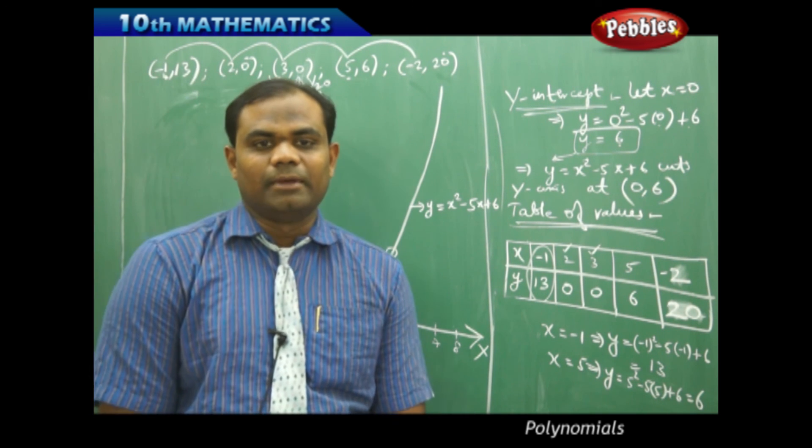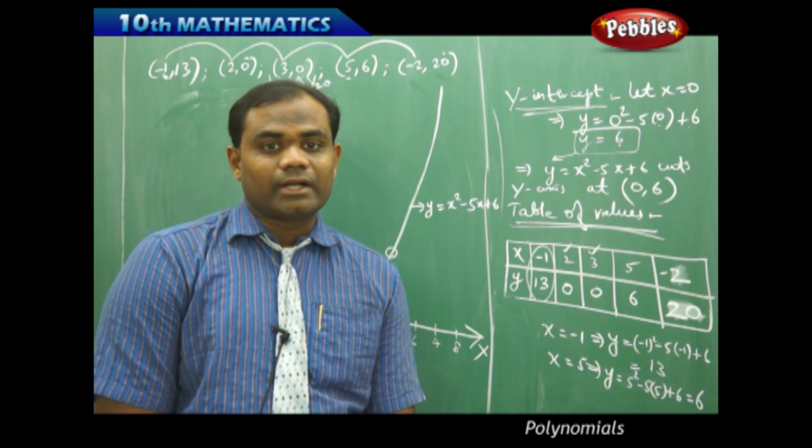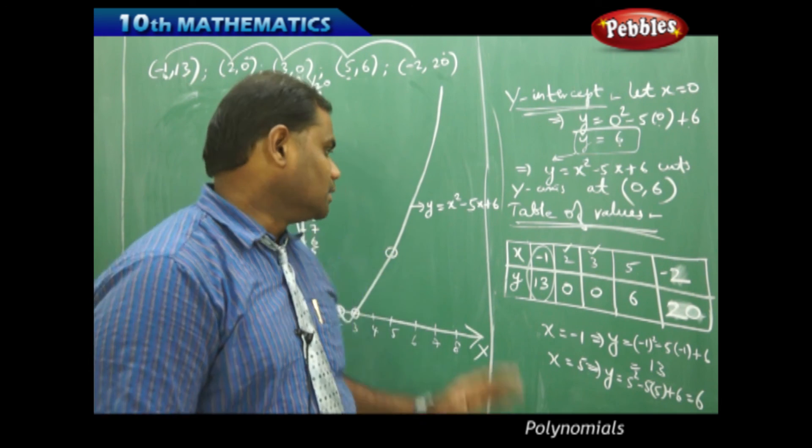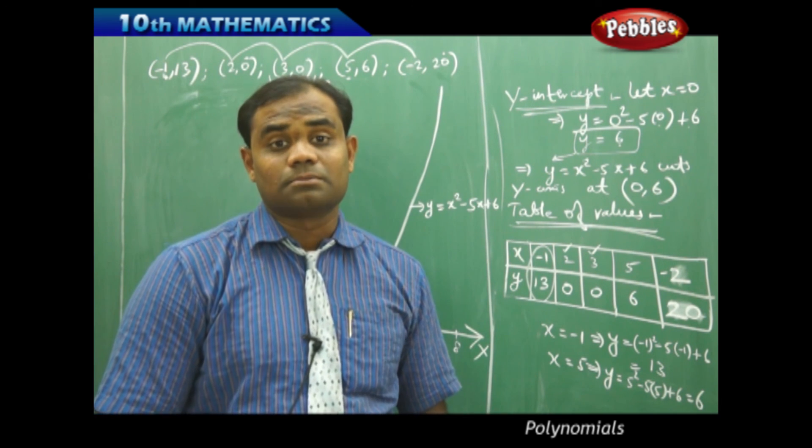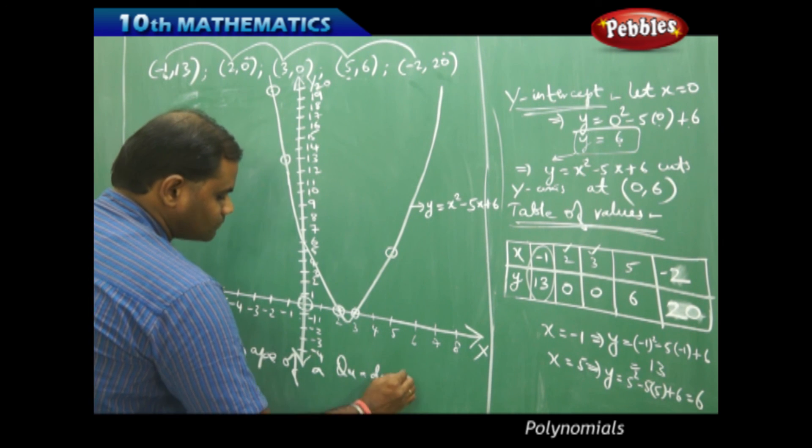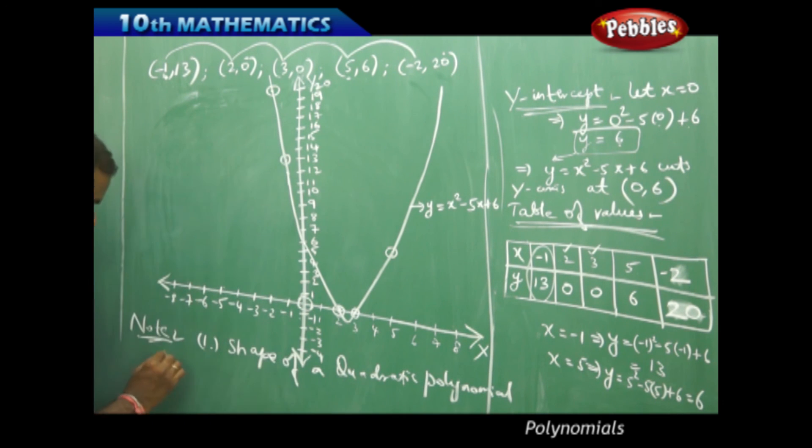So, what are the learning outcomes I make in this quadratic polynomial is the biggest question. The linear polynomial is a straight line. The quadratic polynomial is a u-shaped curve which is called parabola in mathematics.